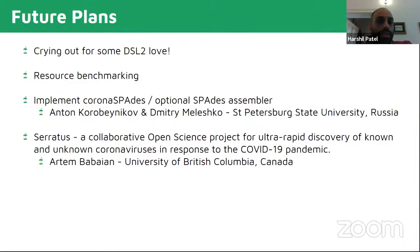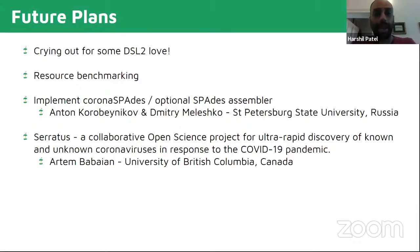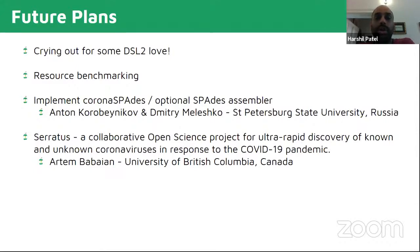Some future plans — we definitely need a DSL2 implementation here. There are a lot of processes that are reused all over the place given that we're running three variant callers and four assemblers, and the downstream processes after those steps are pretty much the same. So it'd be amazing to get a DSL2 implementation. Given that we needed to get this pipeline out as quickly as possible, we didn't really do any resource benchmarking, but it would be nice to do that. We have stress tested the pipeline quite a lot on small, medium and large datasets and it does work, so it'd be nice to refine this a little bit more. We're also working with Anton and Dimitri from St. Petersburg State University, who are the main authors of SPADES, and they're now on our Slack helping out.